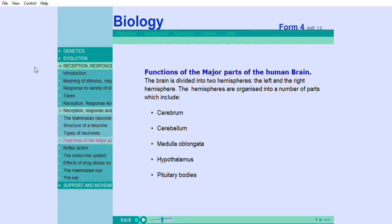Functions of the major parts of the human brain. The brain is divided into two hemispheres, the left and the right hemisphere. The hemispheres are organized into a number of parts, which include cerebrum,